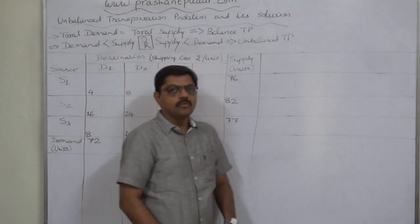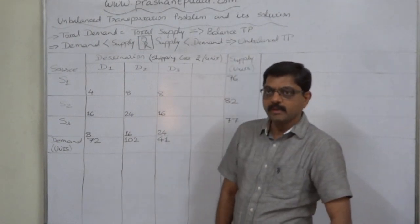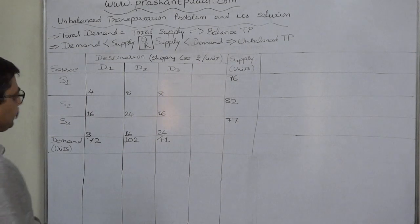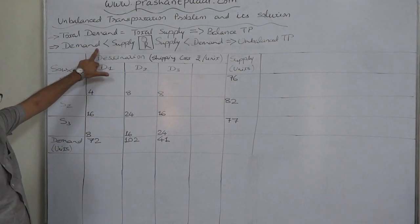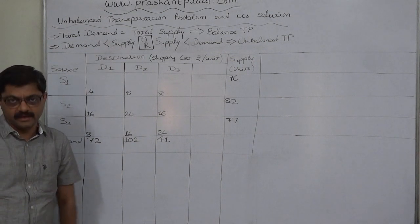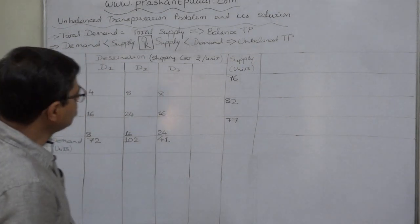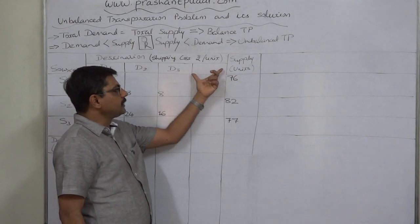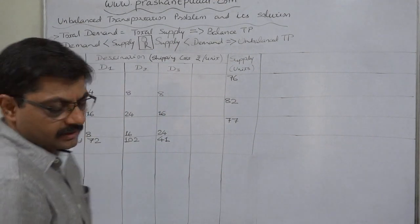The question is: how do we make an unbalanced transportation problem a balanced one? It is very easy. Take the first possible situation: if demand is less than supply, we just have to add one dummy column as an additional demand center.